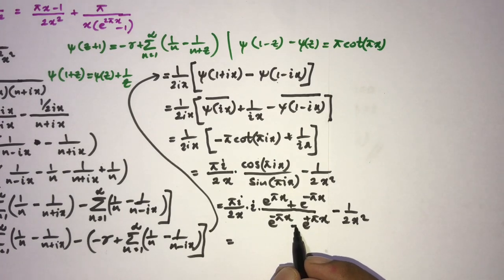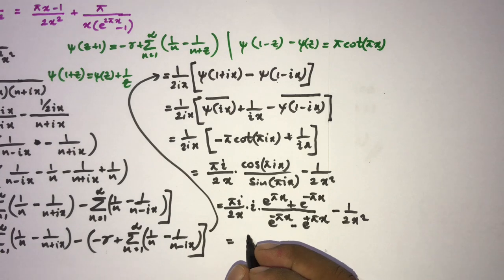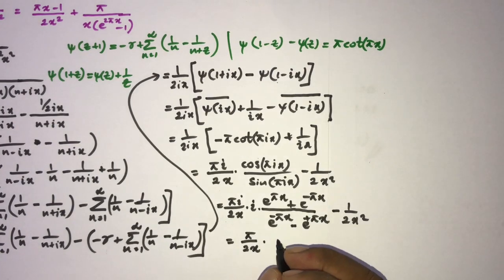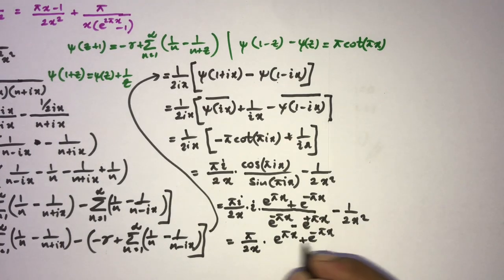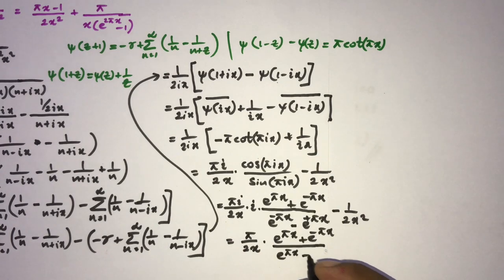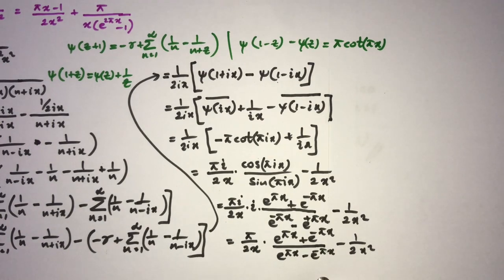Taking the minus sign into account with i² = −1, we obtain π/(2x) · (e^(πx) + e^(−πx))/(e^(πx) − e^(−πx)) minus 1/(2x²).